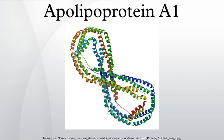21 peptides have been observed through mass spectrometry data. Apolipoprotein A1 is the major protein component of high-density lipoprotein in plasma. Chylomicrons secreted from the intestinal enterocyte also contain APOA1, but it is quickly transferred to HDL in the bloodstream.